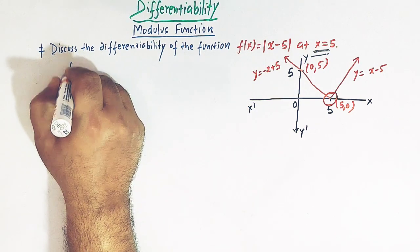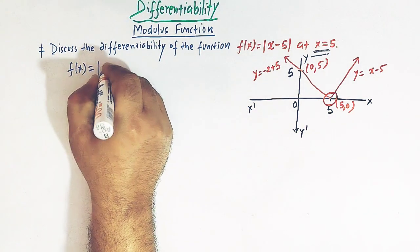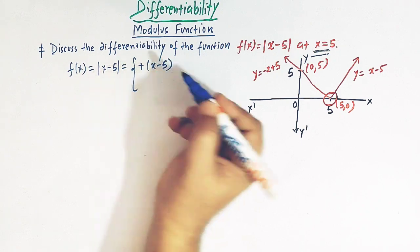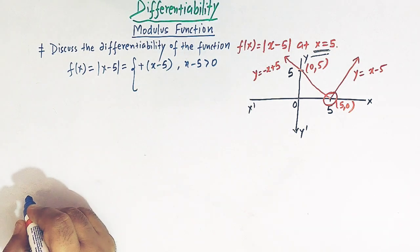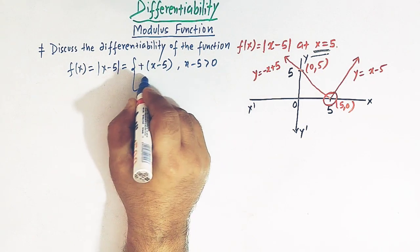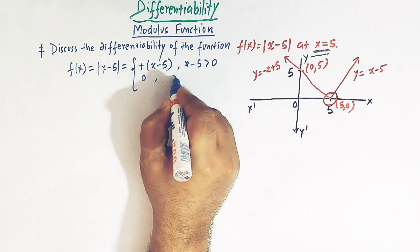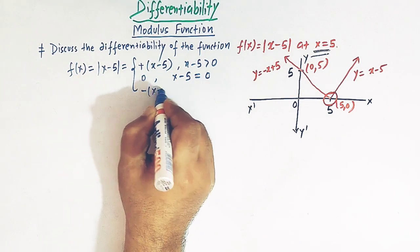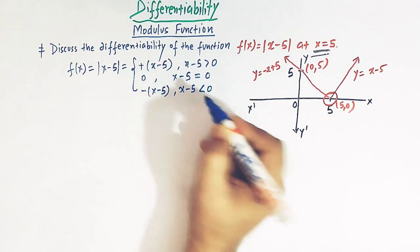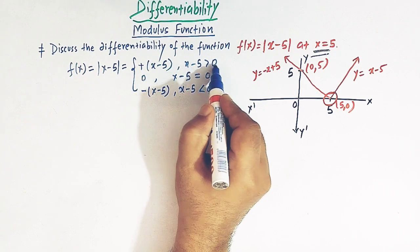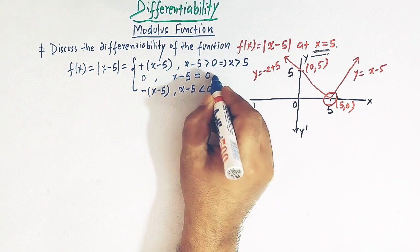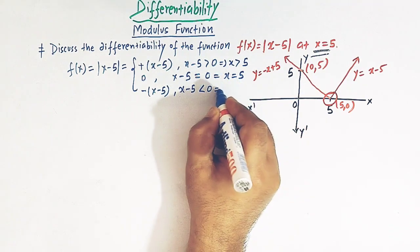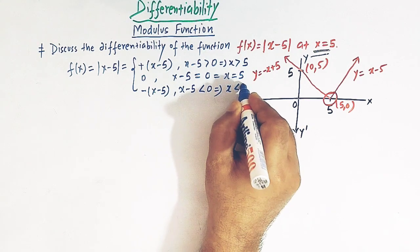Let us define f(x) = |x - 5|. So |x - 5| takes the value (x - 5) whenever x - 5 > 0, which means x > 5. It equals 0 when x = 5, and equals -(x - 5) whenever x - 5 < 0, which means x < 5.